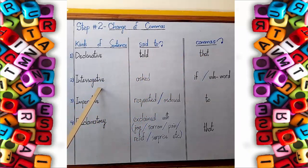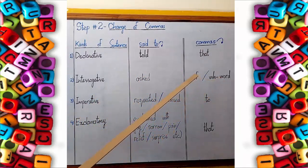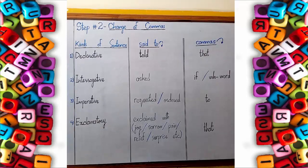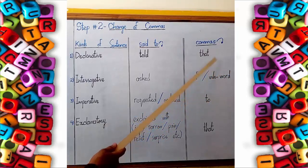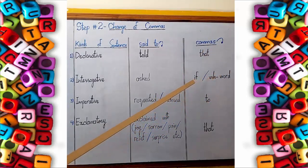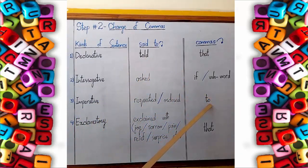If an interrogative sentence is given, commas are changed into either 'if' or a wh-word. There are two types of interrogative sentences: a simple interrogative and a wh-question. If there is a wh-question in the reported speech, you use the same wh-word instead of commas. If there is a simple question, you use 'if' instead of commas. If an imperative sentence is given in reported speech, you change commas into 'to'. If an exclamatory sentence is given in reported speech, you change commas into 'that'.